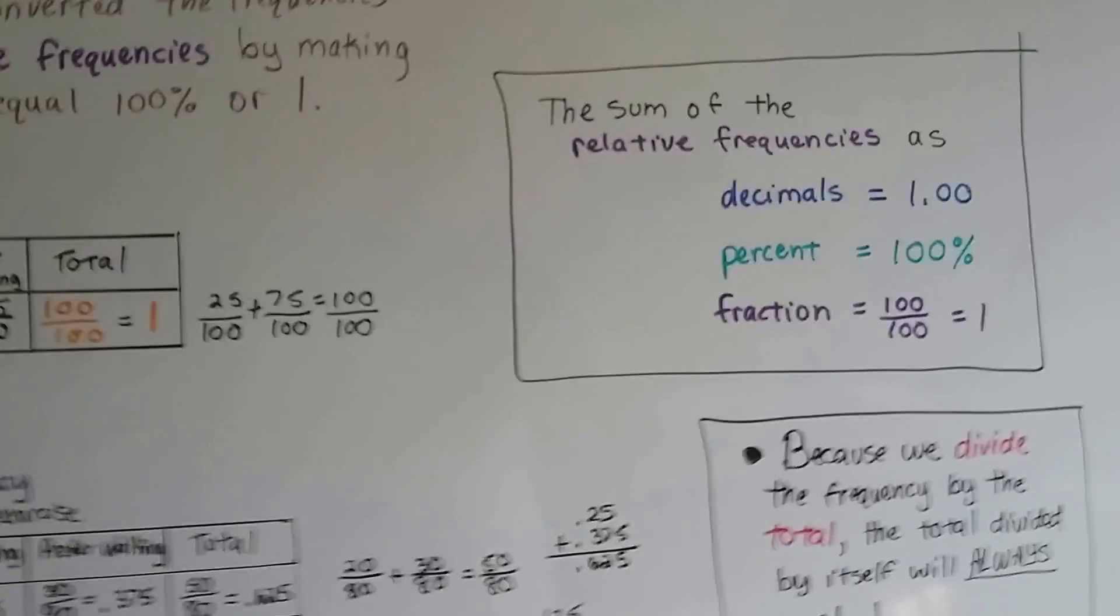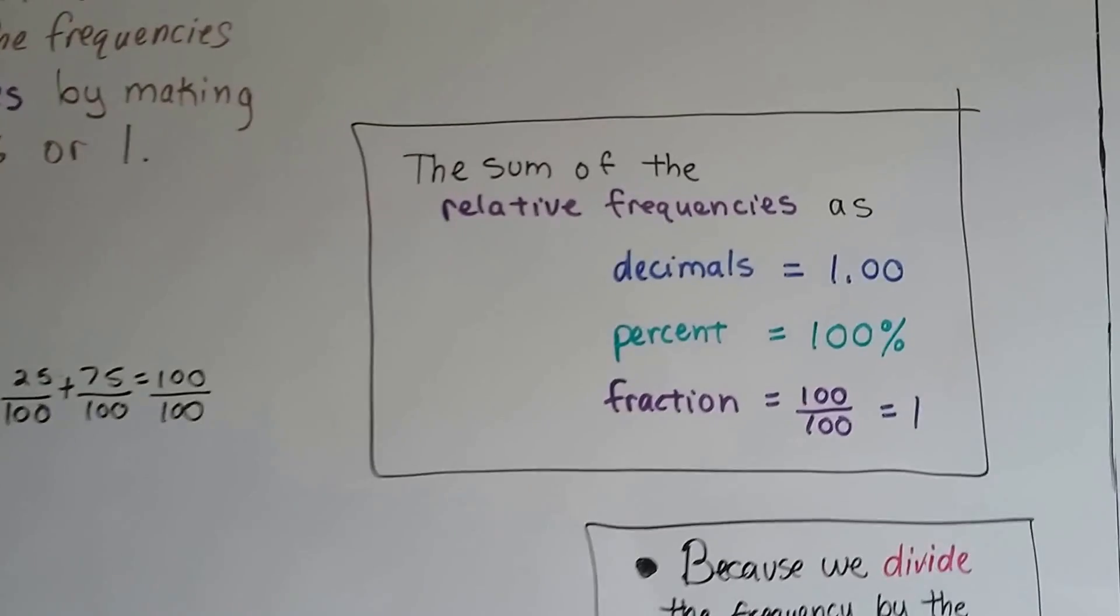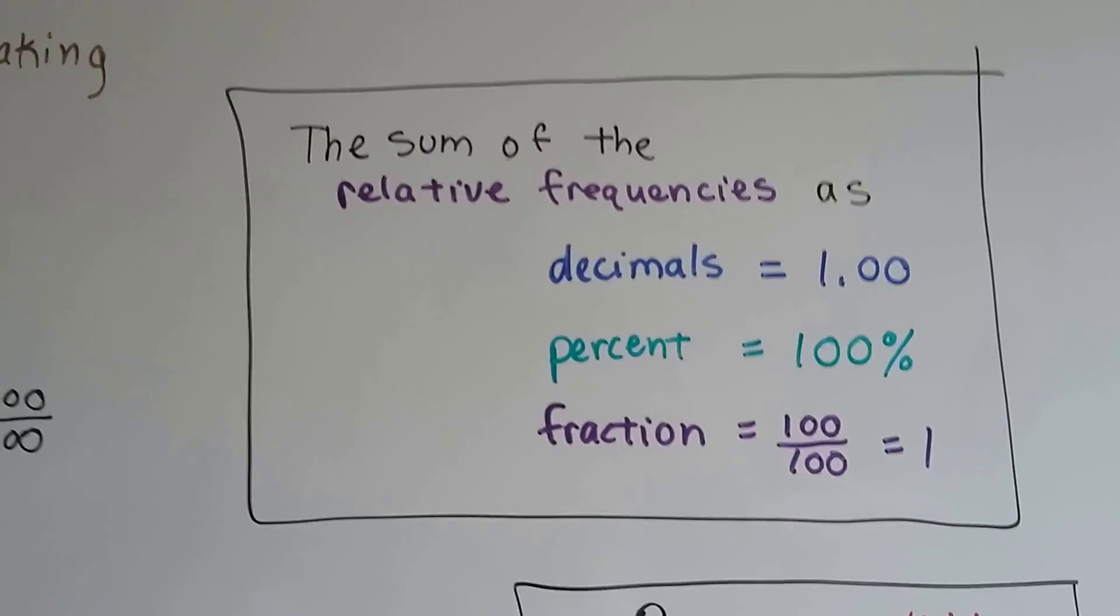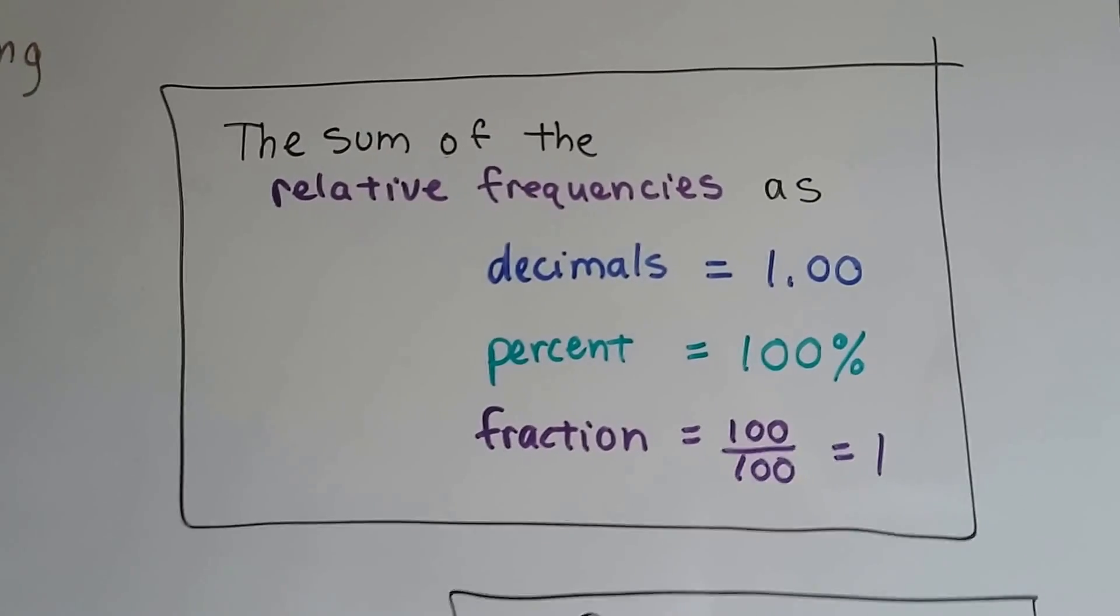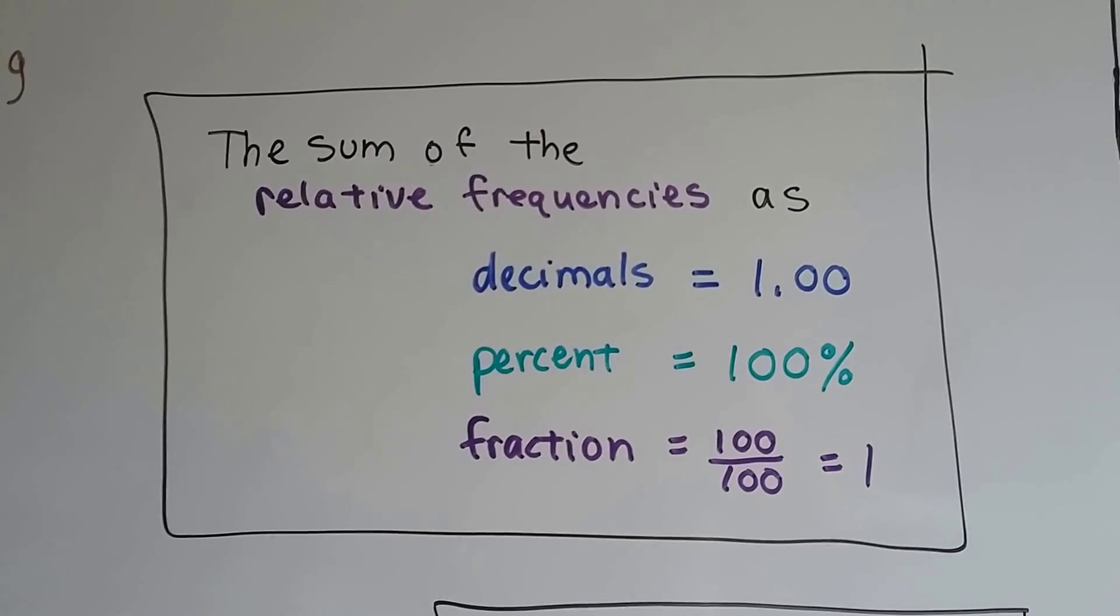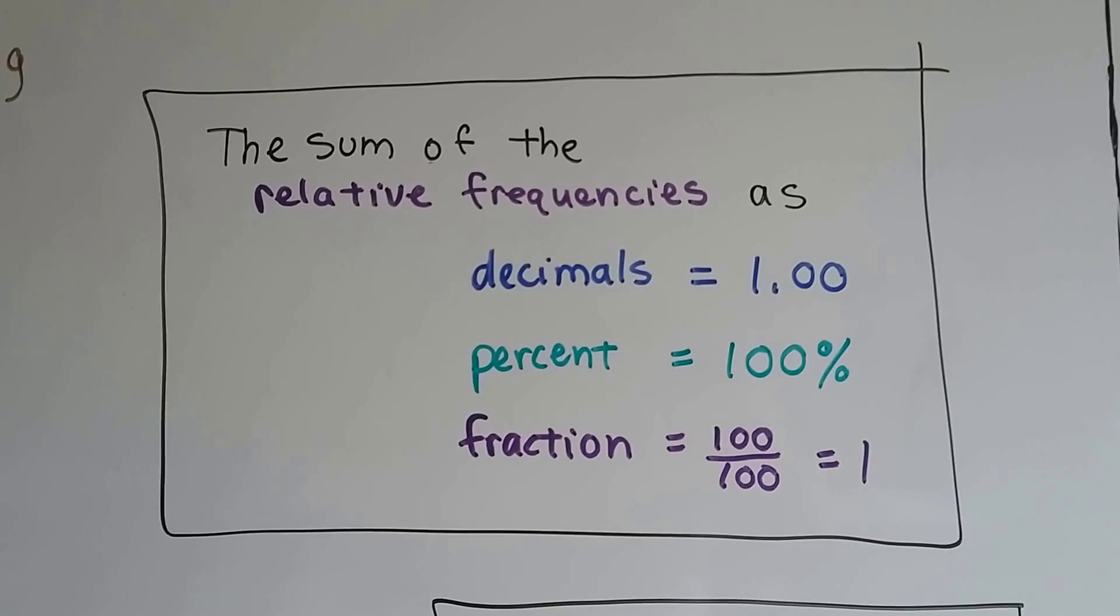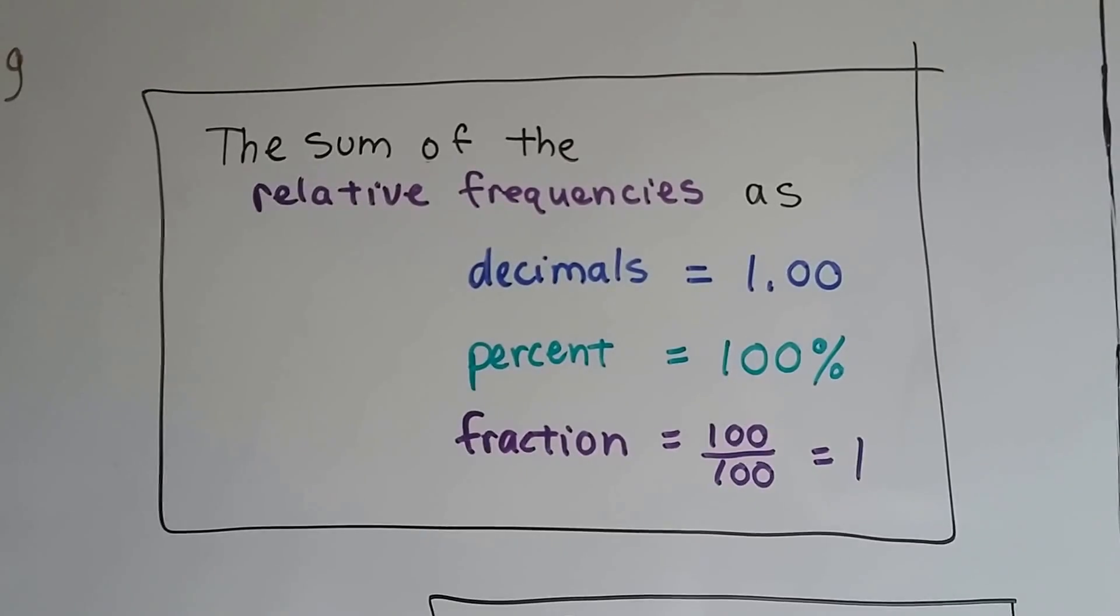So the sum of the relative frequencies as decimals is going to be 1.00. As a percent, they're going to be 100%. And as a fraction, it's going to be 100 over 100, with the same numerator and denominator, which of course equals 1.